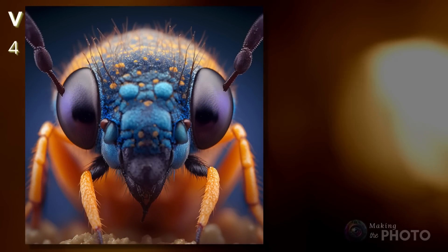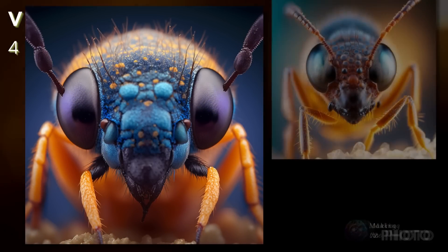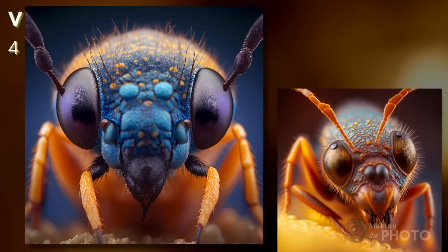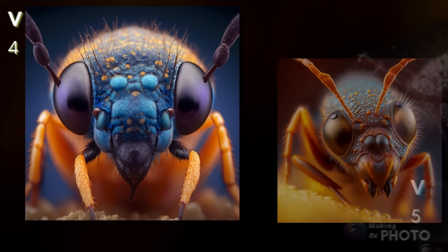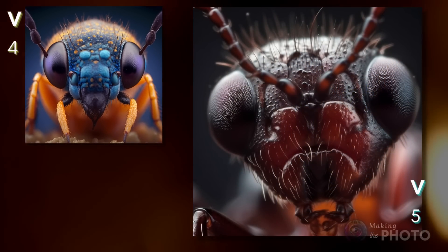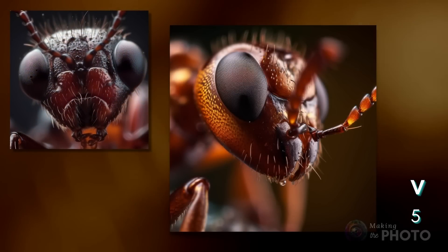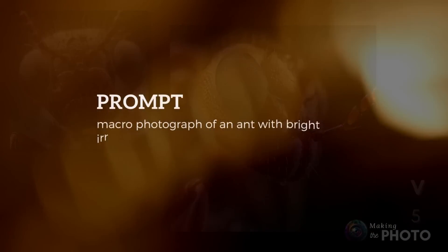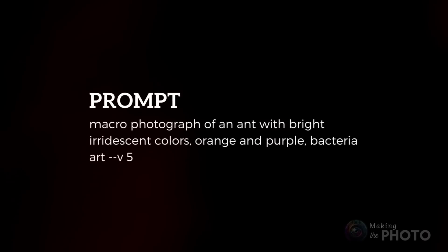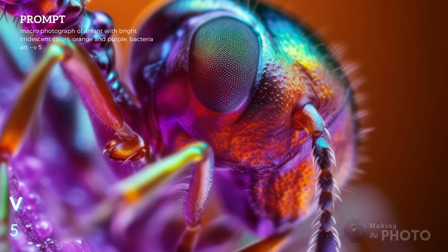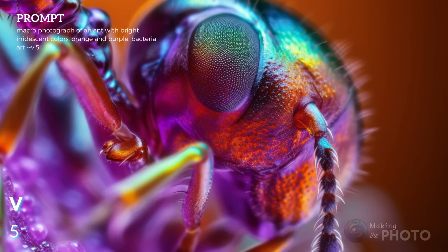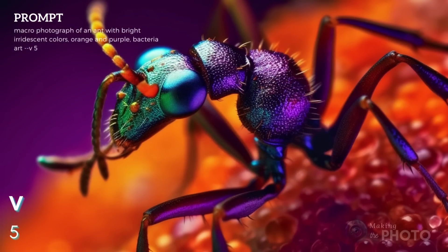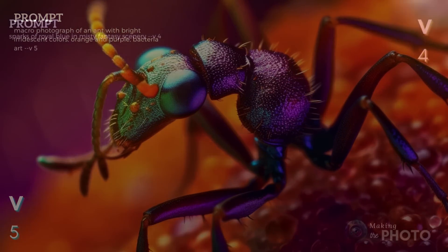This macro image of an ant in version 4 is pretty cool. The ant has colors that you wouldn't expect to see on an ant, though maybe the iridescence of other insects. Version 5 nails the colors and the macro close-up, but it loses some of the unreal but artistic art colors. You're going to have to ask for something beyond the real world. Midjourney won't stamp its style on your image — if you want something in a particular style, you're going to have to ask for it. But if you get the prompt right, you'll get something absolutely amazing.